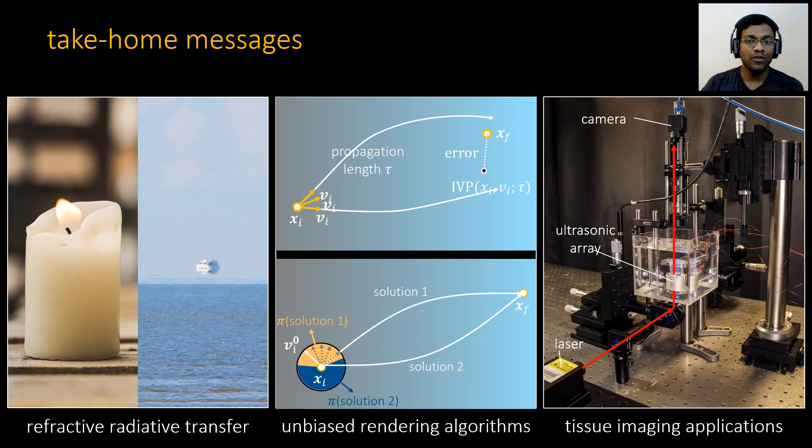To summarize, we have focused on simulating refractive radiative transfer, which refers to light transport in media that have both continuous refraction and scattering. Such media occur both in real-world scenarios and scientific applications. We have shown how to enable unbiased path tracing techniques for simulating the RRTE by developing procedures for creating direct connections inside continuously refractive media.